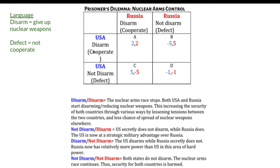But the danger for me is if I disarm - if I cooperate and you defect, and defect means not cooperate - I'm in a really weak position. Because suddenly I've given up my nuclear weapons, I'm on minus five, you haven't, so you're on five. And suddenly the power imbalance is huge.